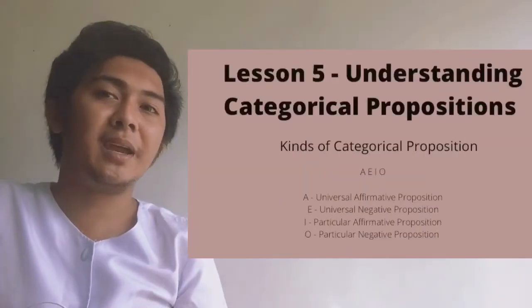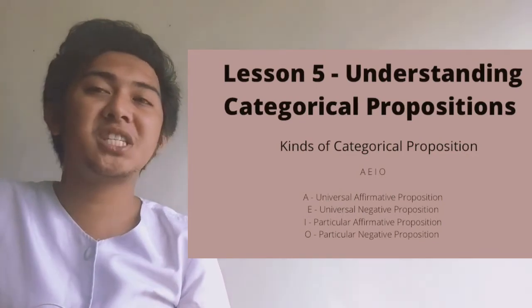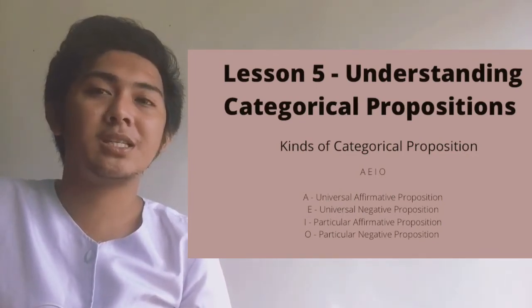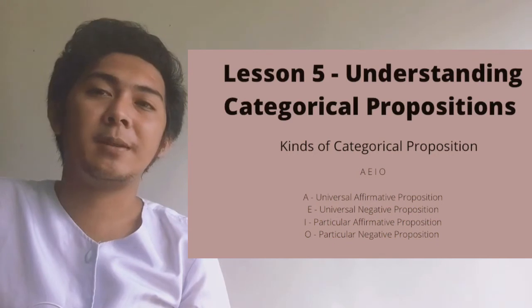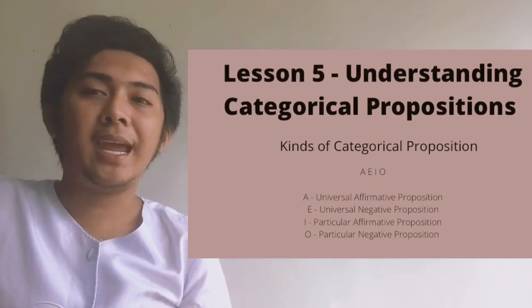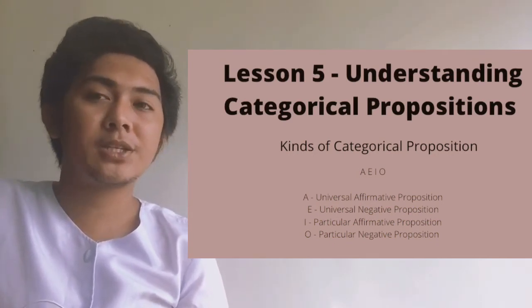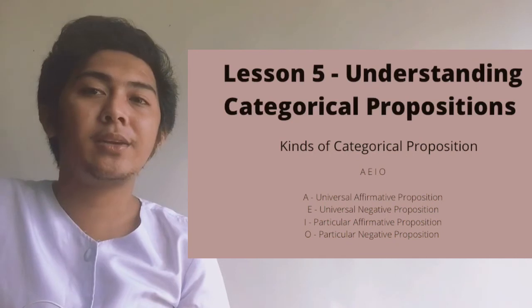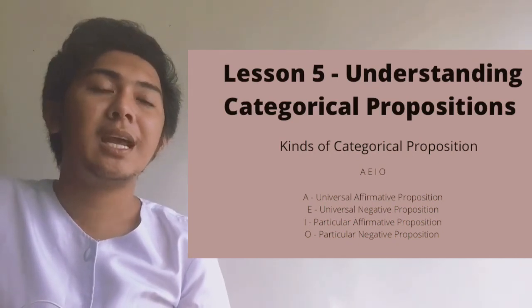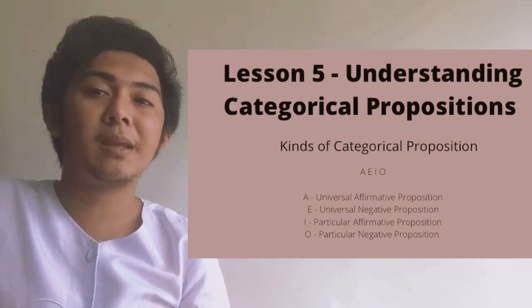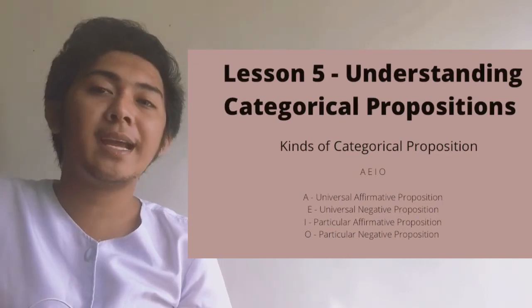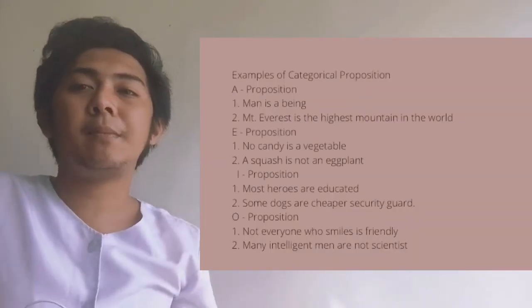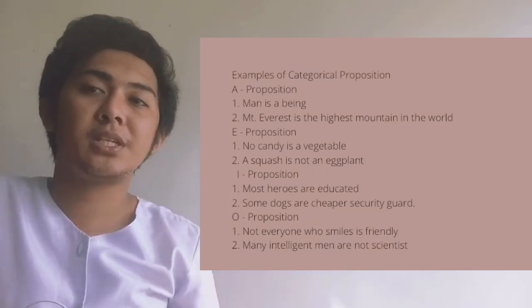Let's come now to Lesson 5: understanding categorical propositions. The kinds of categorical propositions are: A — universal affirmative proposition; E — universal negative proposition; I — particular affirmative proposition; and O — particular negative proposition. Here are examples of categorical propositions.